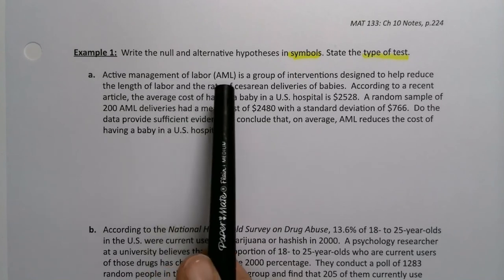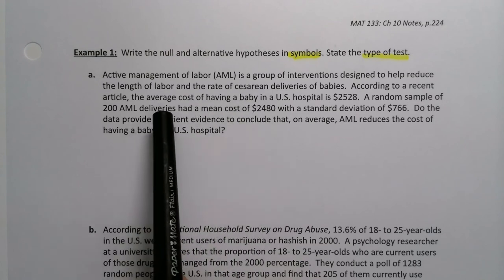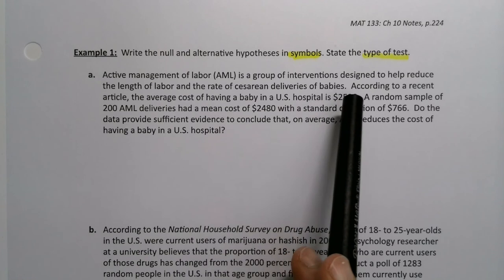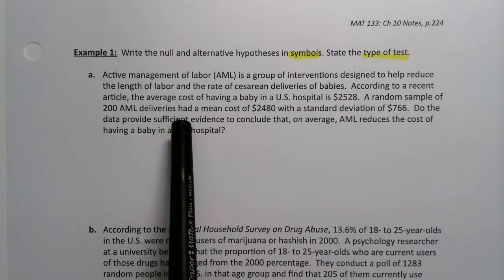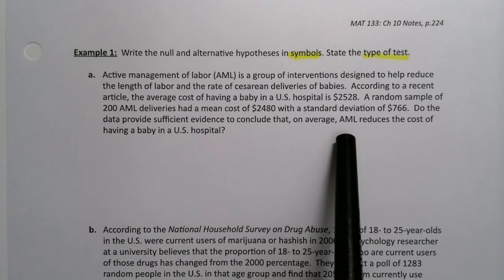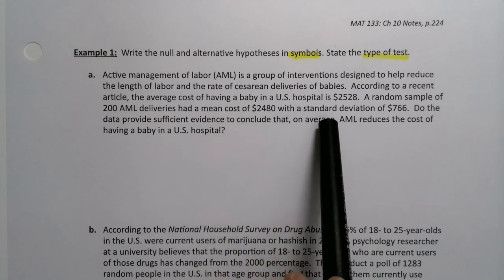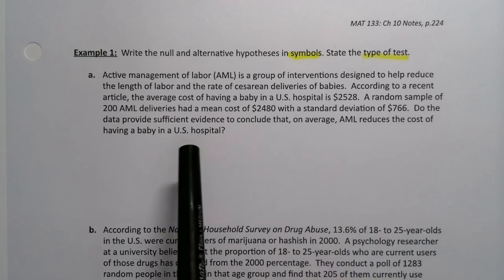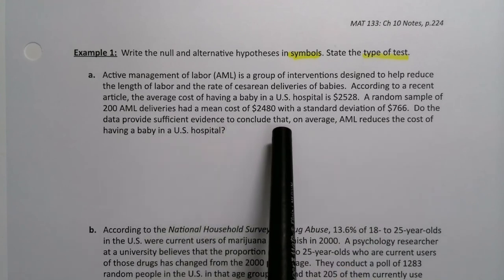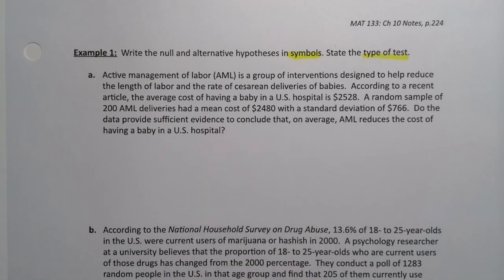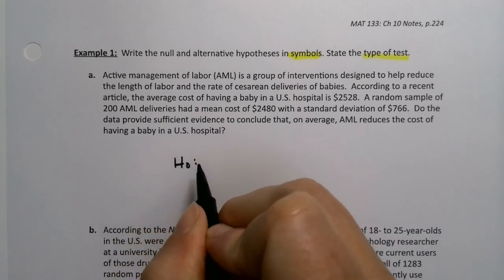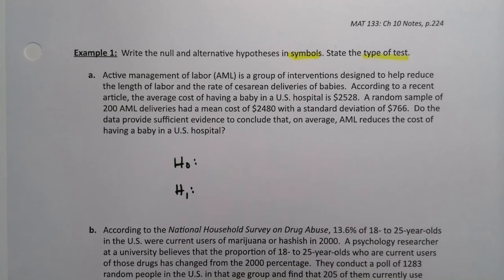So active management of labor, AML, is a group of interventions designed to help reduce the length of labor and the rate of cesarean deliveries of babies. According to a recent article, the average cost of having a baby in a U.S. hospital is $2,528. A random sample of 200 AML deliveries had a mean cost of $2,480 with a standard deviation of $766. Do the data provide sufficient evidence to conclude that on average, AML reduces the cost of having a baby in a hospital? So much stuff to talk about. We start off, we know we're going to need H0, and we know we're going to need H1. And for that matter, I know that the null hypothesis is going to have an equal sign in it because it always does.